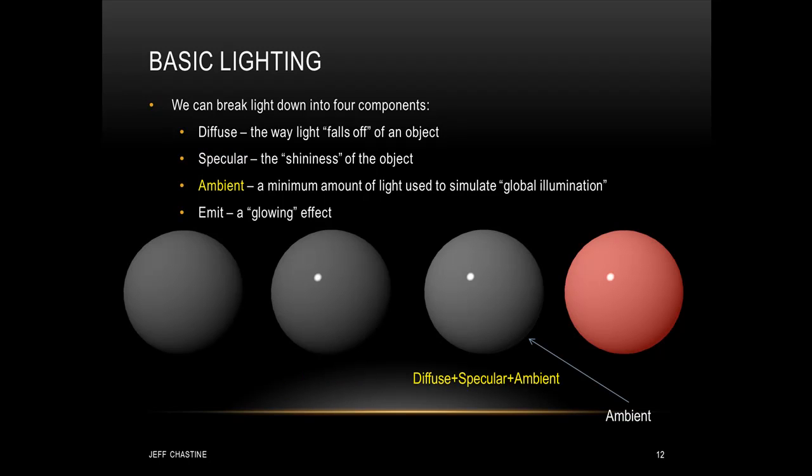The third component is called the ambient component, and it's very subtle. We use this as a hack to simulate global illumination. So in this third image we've combined the diffuse, specular, and ambient lighting components. Now it may be a little bit difficult to notice, but you can see the ambient component if you compare images two and three. It's most pronounced in the lower right hand part of that image.